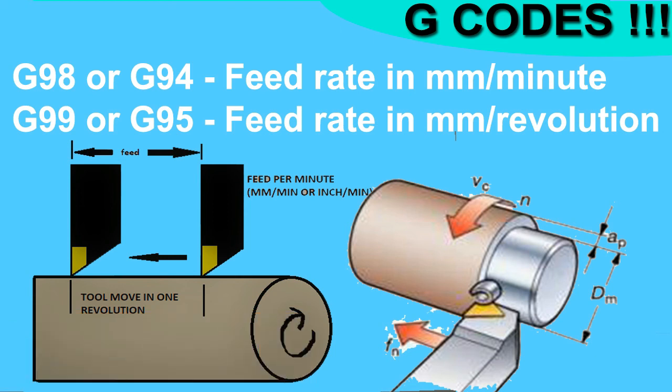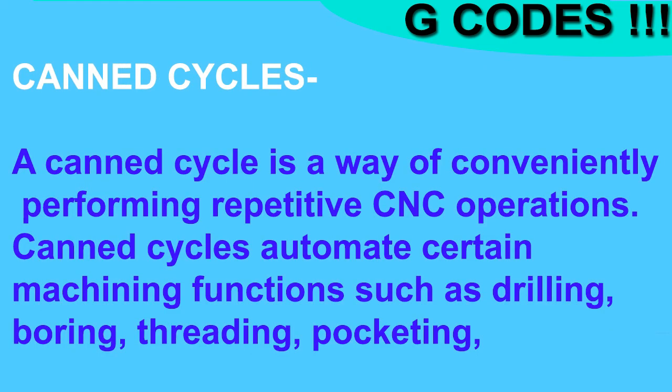G98 and G99 define the units for feed rate in CNC turning. G98 provides feed rate in millimeters per minute, and G99 in millimeters per revolution. G99 (mm/rev) is mostly used in CNC turning because it provides better understanding of the cutting rate of the tool.